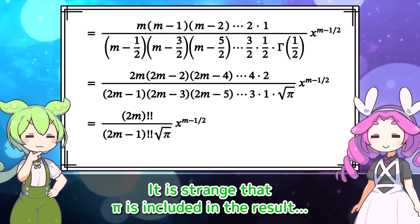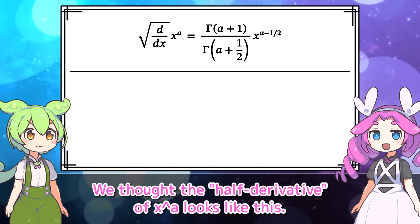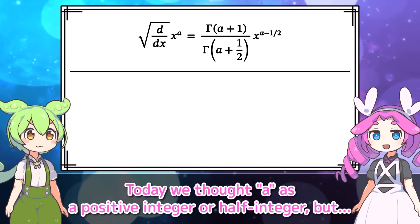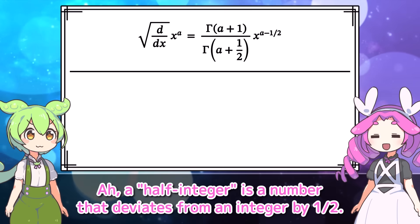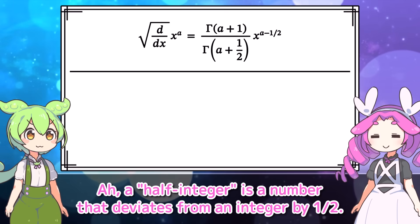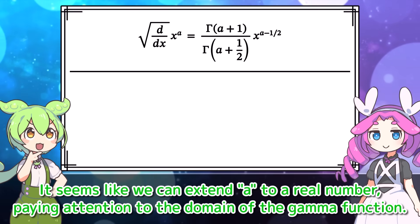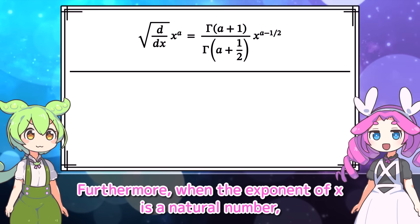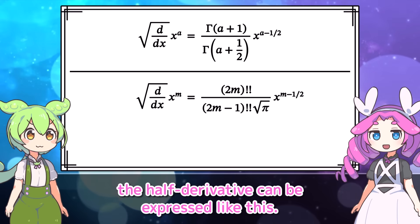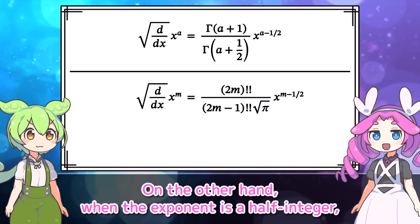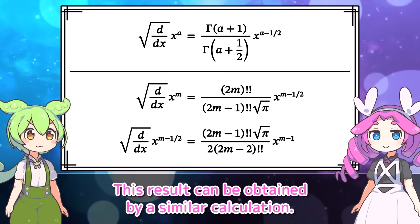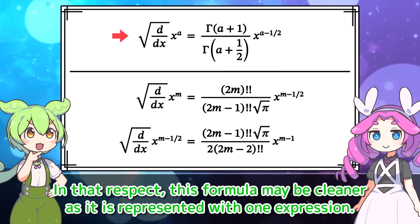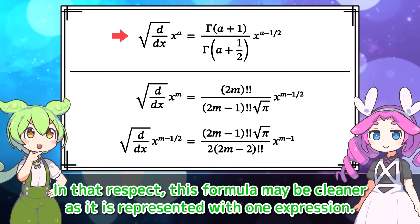To summarize: the half derivative of x to the a looks like this, and if you repeat it twice it becomes the derivative. We considered a as a positive integer or half integer — a half integer being a number that deviates from an integer by one-half. It seems we can extend a to a real number, paying attention to the domain of the gamma function. When the exponent of x is a natural number, the half derivative can be expressed using double factorials; when the exponent is a half integer, a similar calculation applies. The gamma function formula may be cleaner as it represents both cases with one expression.